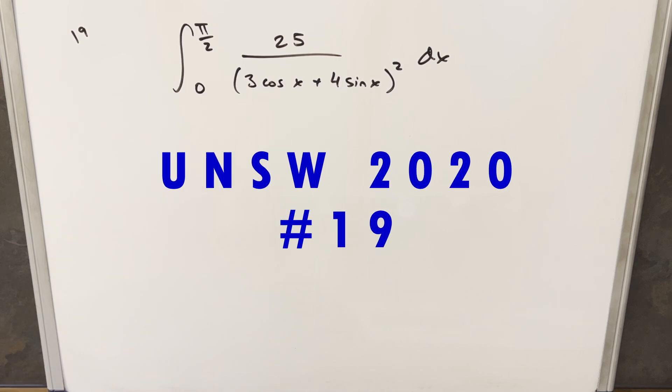Okay, we have here another integral from the UNSW integration B2020, this one's problem 19. We have the integral from 0 to pi over 2, 25 over 3 cosx plus 4 sinx all squared dx.